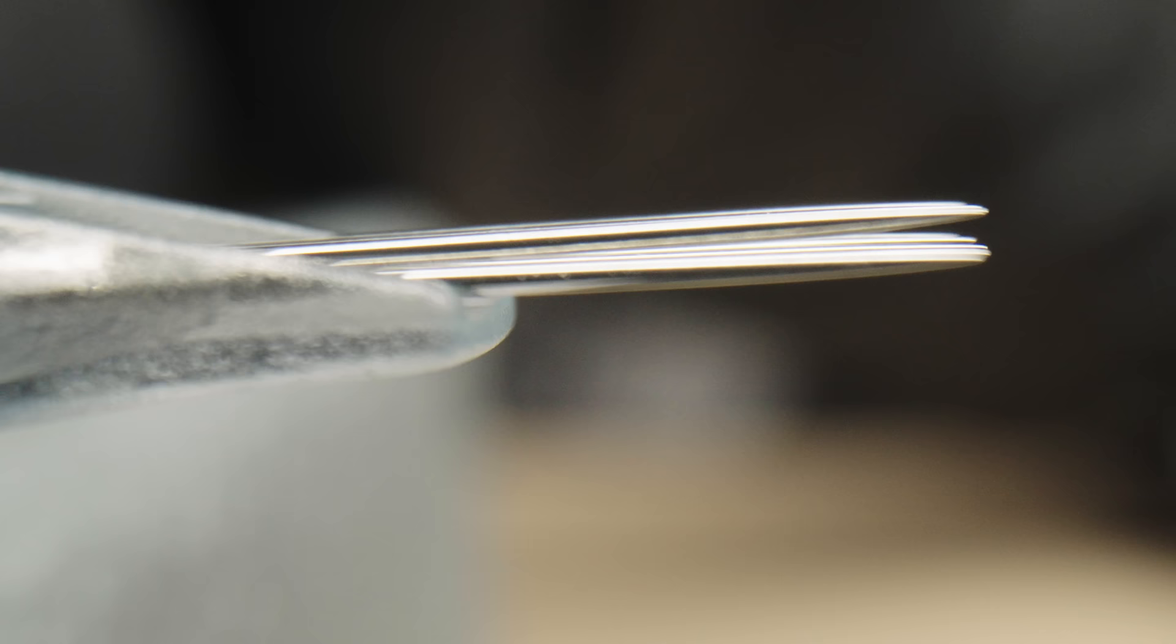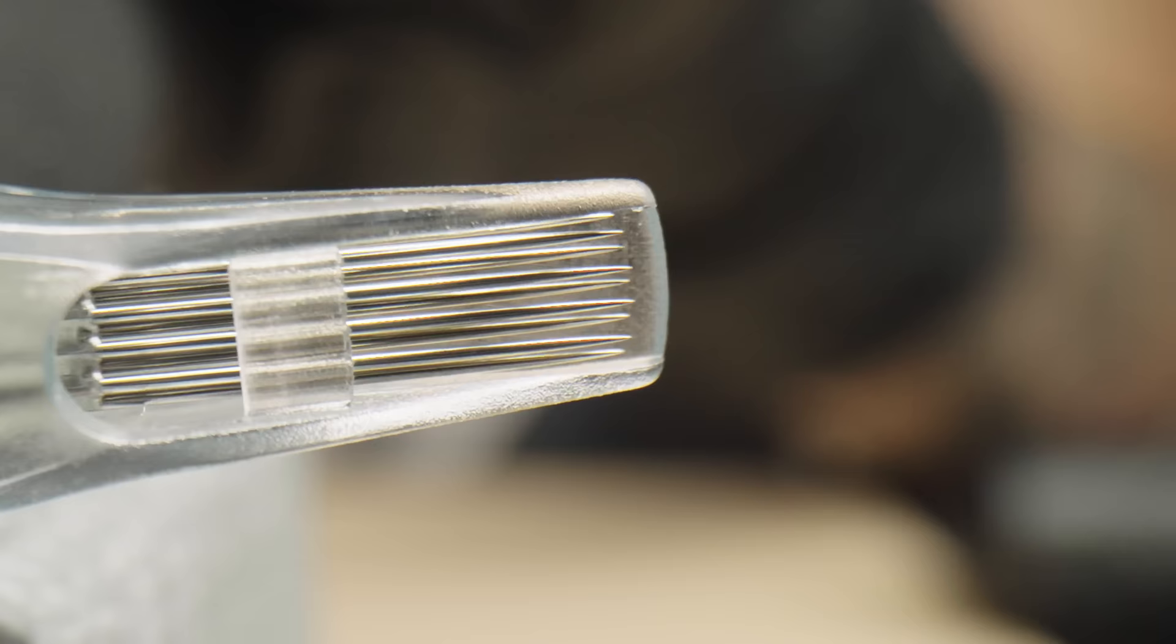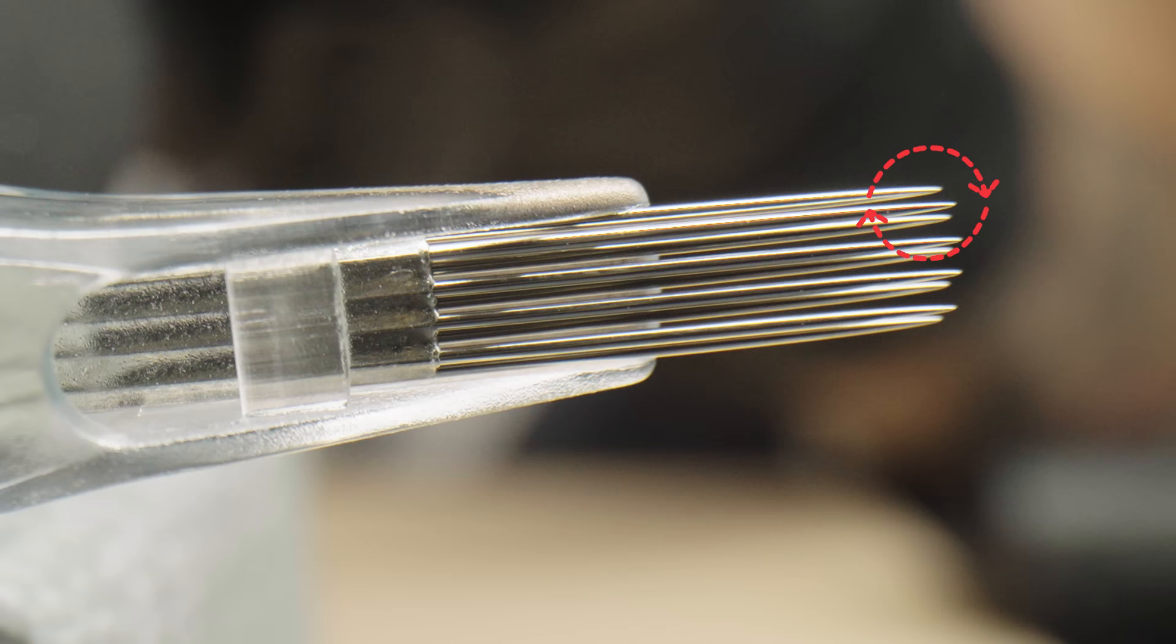To shade the slightly larger areas, I'm using a 9 Magnum Soft Edge needle. It's important that the needle has rounded edges. This is crucial for creating smooth transitions while shading.